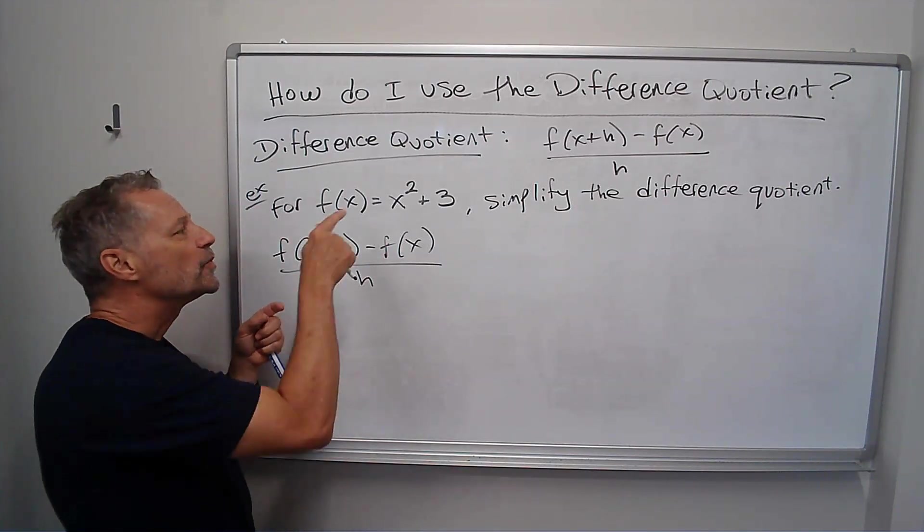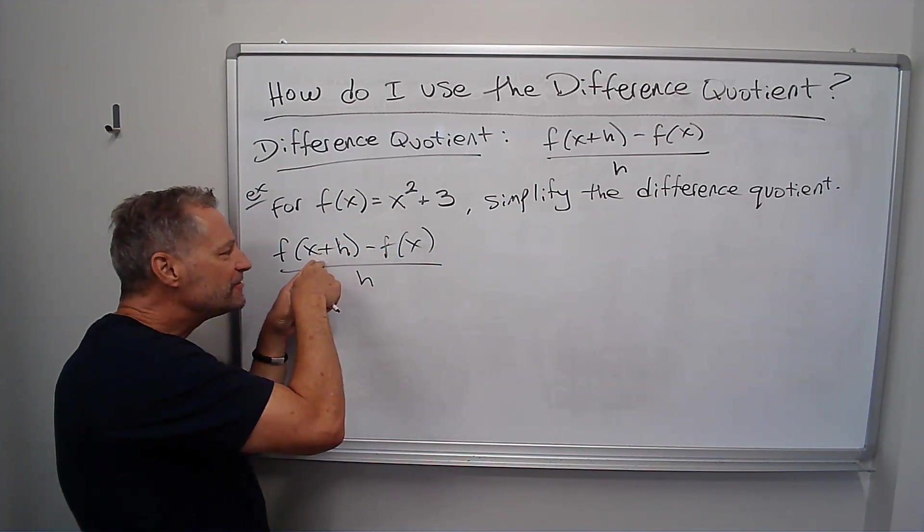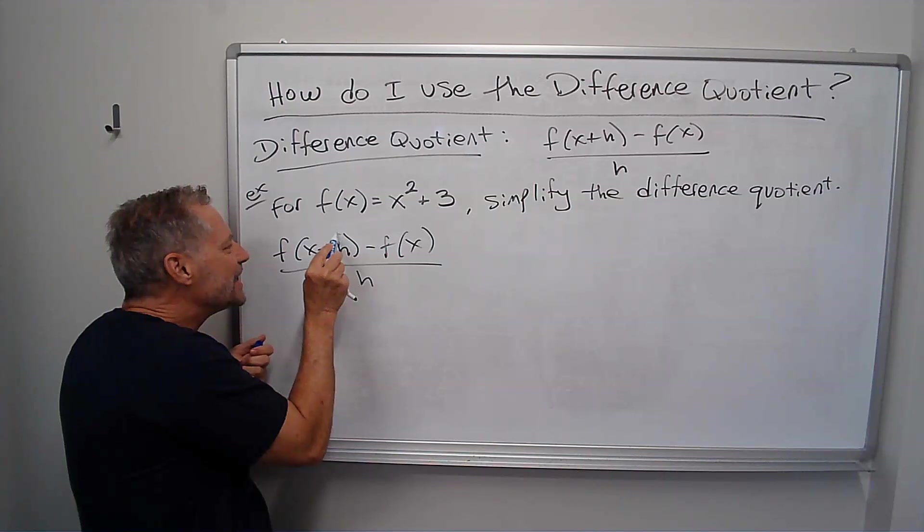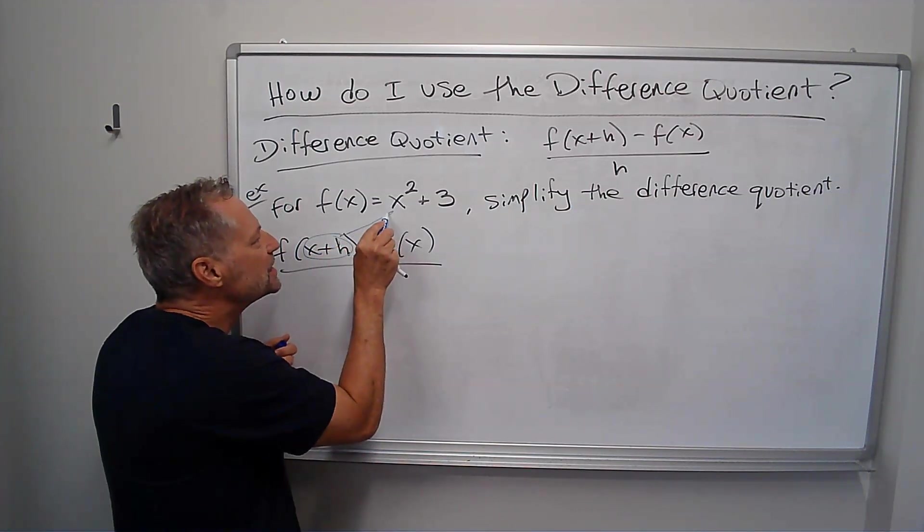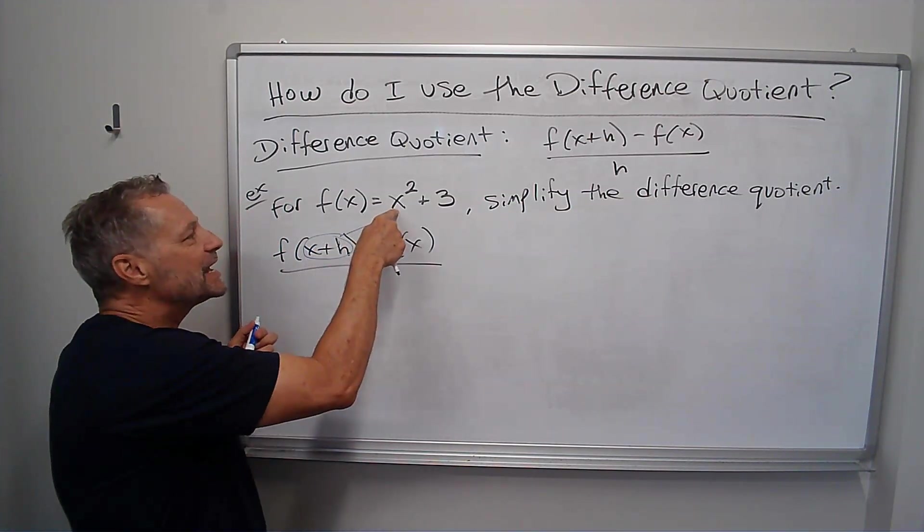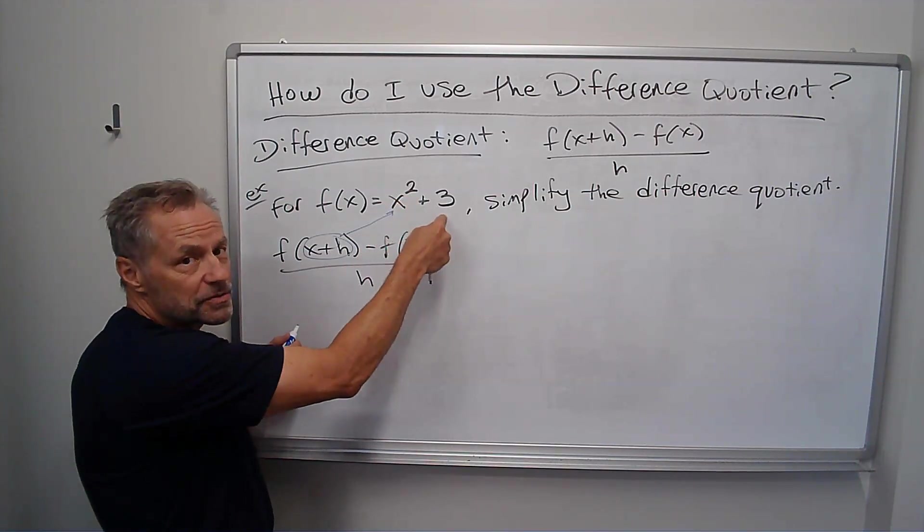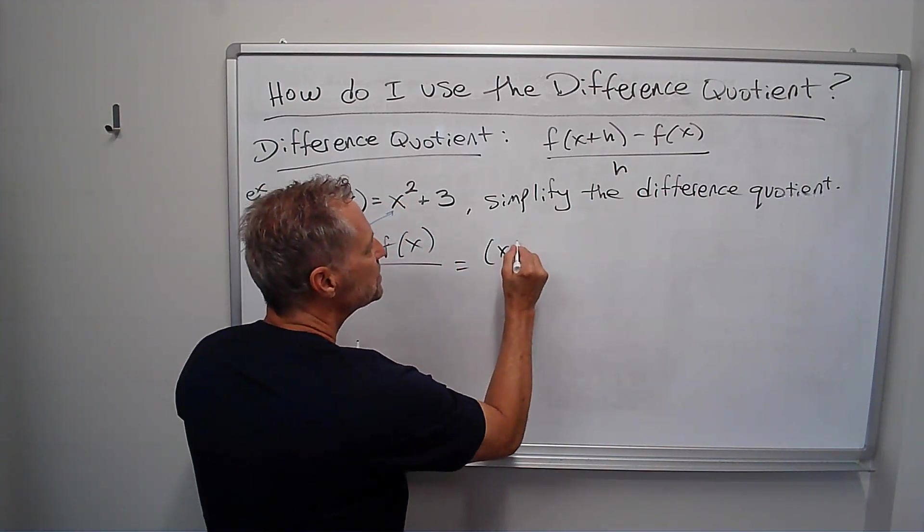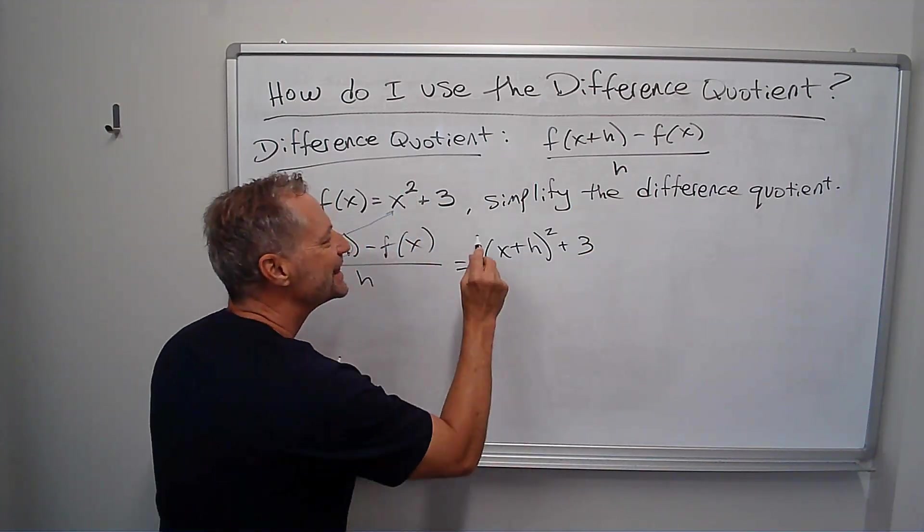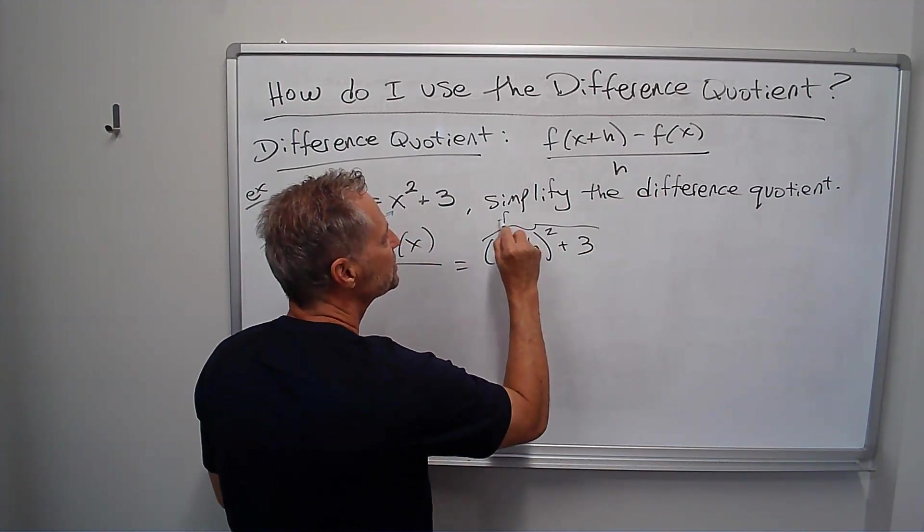And then we're going to plug things in. Remember, f of x plus h means you take this x plus h and you plug it in where the x is. So that's going to be x plus h squared plus 3. That whole thing is my f of x plus h.